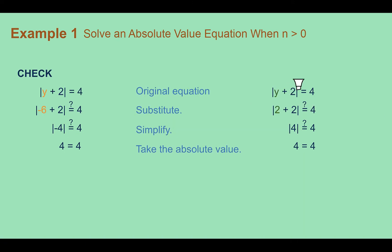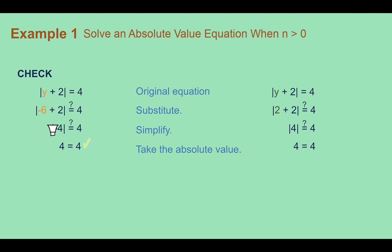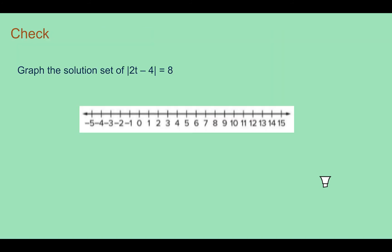We need to check both solutions. Plugging in negative 6: negative 6 plus 2 is negative 4, and the absolute value of negative 4 equals 4 — yes, that works. Plugging in 2: 2 plus 2 is 4, and the absolute value of 4 equals 4 — yes, that also works. Check your understanding: graph the solution set of the absolute value of 2t minus 4 equals 8. Pause the video and complete the check.